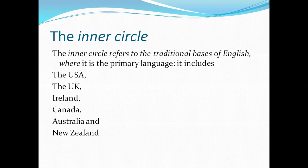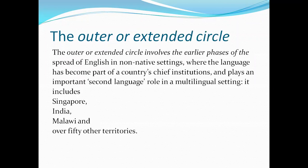The inner circle countries are the USA, UK, Ireland, Canada, Australia, and New Zealand. Apart from this inner circle, Kachru has claimed another circle that he has called the outer or extended circle.